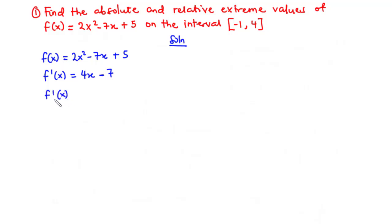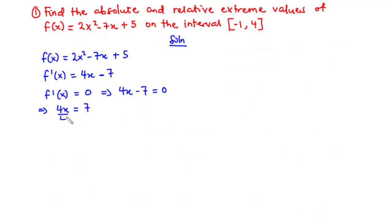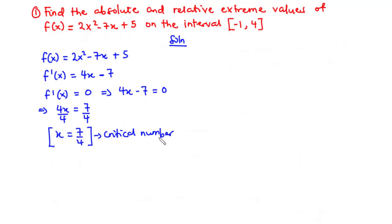Now let's equate f'(x) to 0. We have 4x - 7 = 0. To find the value of x, we transpose -7 to the right-hand side: 4x = 7, so x = 7/4. We call this the critical number. A critical number is the value of x such that the first derivative of a function is either equal to 0 or is undefined.